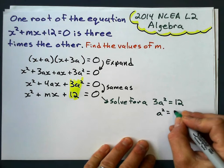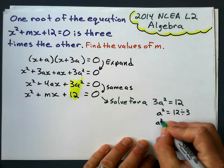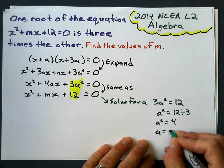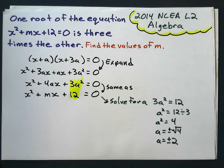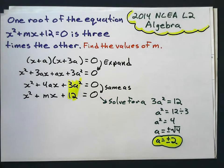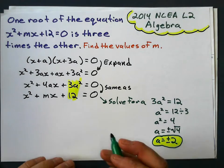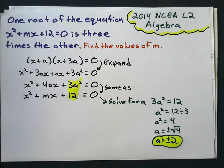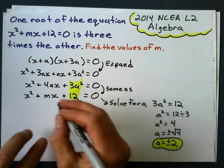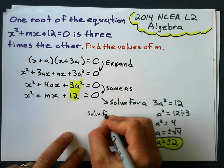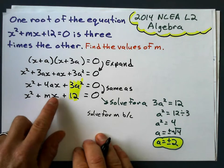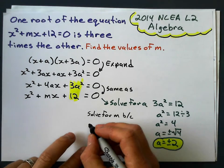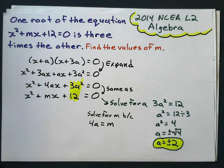Solving for a: a squared equals 12 divided by 3, so a squared equals 4. Therefore a equals plus or minus the square root of 4, which is positive or negative 2. Now, since 4a is the coefficient of x, just like m is the coefficient of x, 4a must equal m.